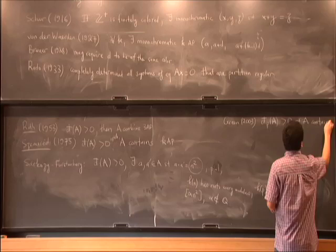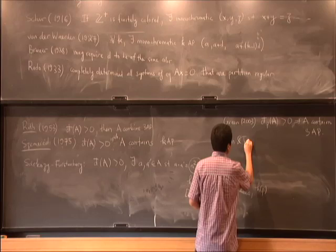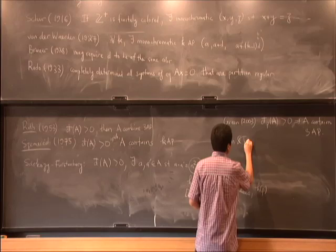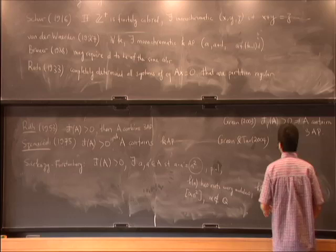And after that, Green and Tao proved that we can find arithmetic progressions of arbitrary length inside any set of positive density.